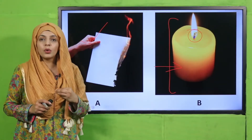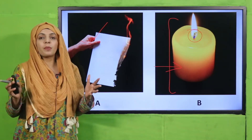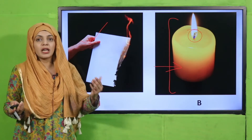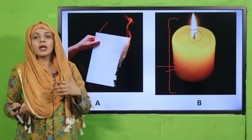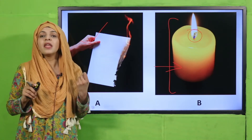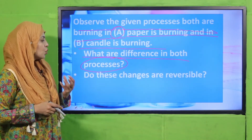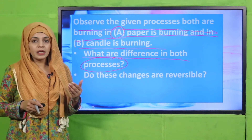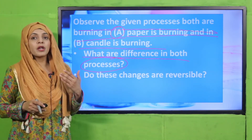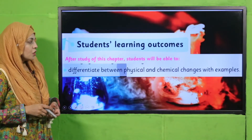The wax melts due to heat, and after the heat is removed, it will again turn into solid. So when new products are formed, that is a chemical change, whereas when only the state changes and no new product is formed, that is a physical change. The melting of candle wax is reversible, whereas the burning of paper and the burning of the wick is irreversible.